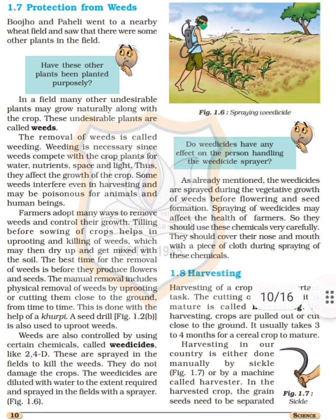These weedicides are sprayed in the field to kill the weeds. They do not damage the crops. The weedicides are diluted with water to the extent required and then sprayed in the field with a sprayer. As already mentioned, weedicides are sprayed during the vegetative growth of weeds, before flowering and seed formation.